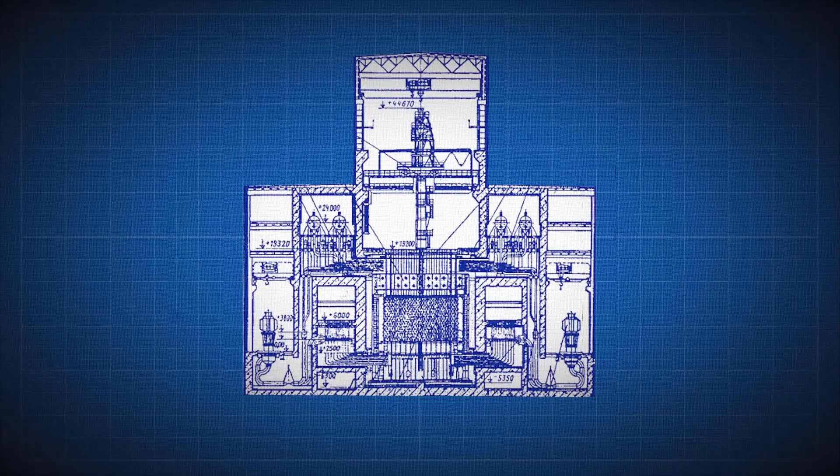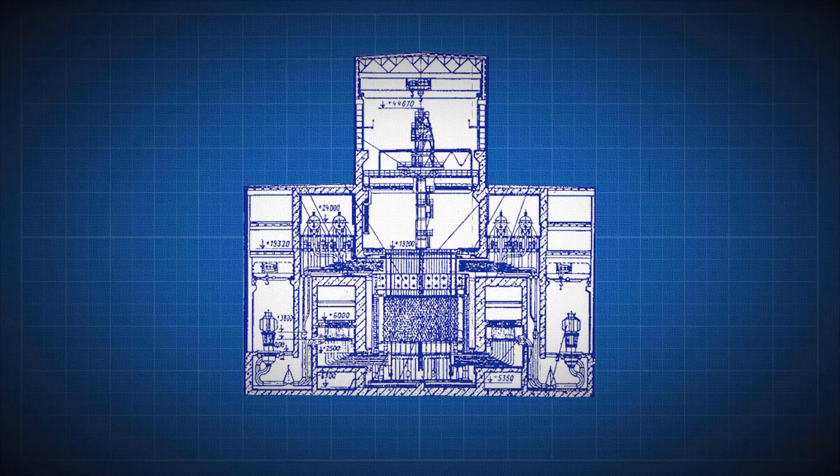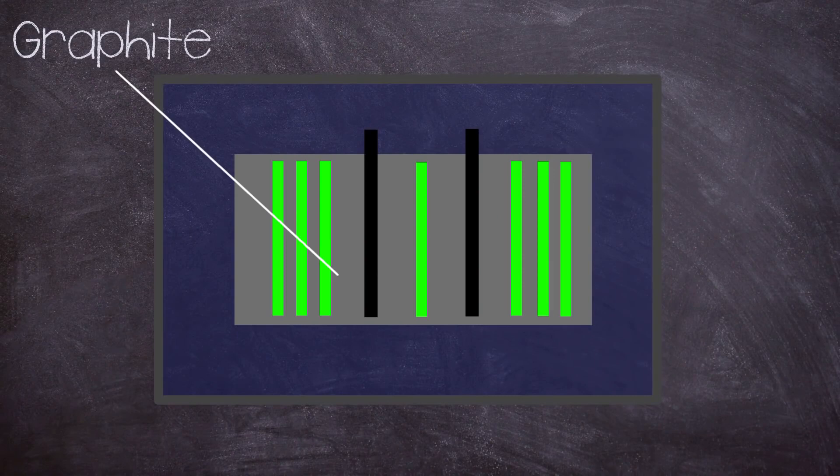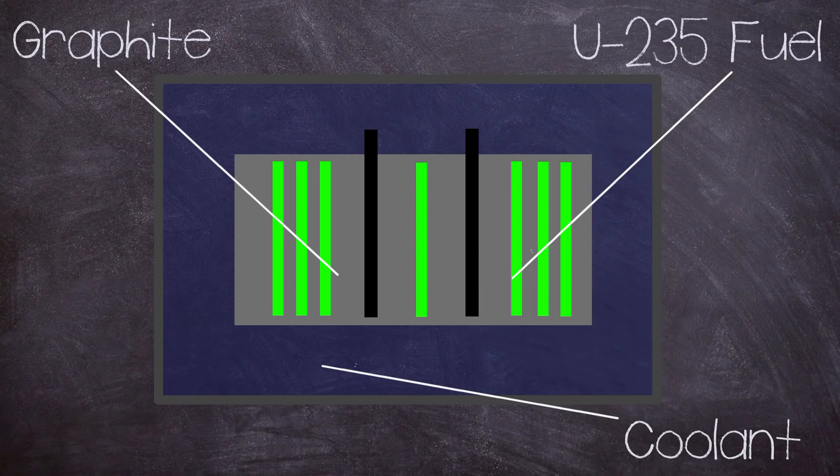The RBMK was a bit of a unique design in the reactor world, but it was a product of evolution rather than revolution in that it used graphite to moderate the chain reaction with light water as a coolant. This combination allowed it to use lower enrichment uranium-235 for fuel, which is not surprisingly significantly cheaper than other reactor designs.